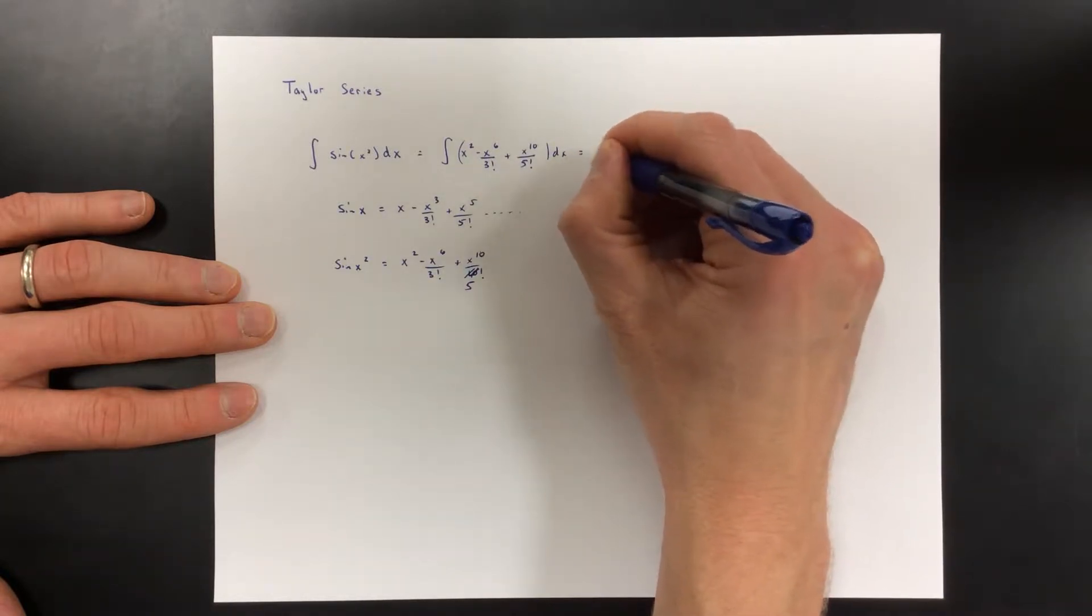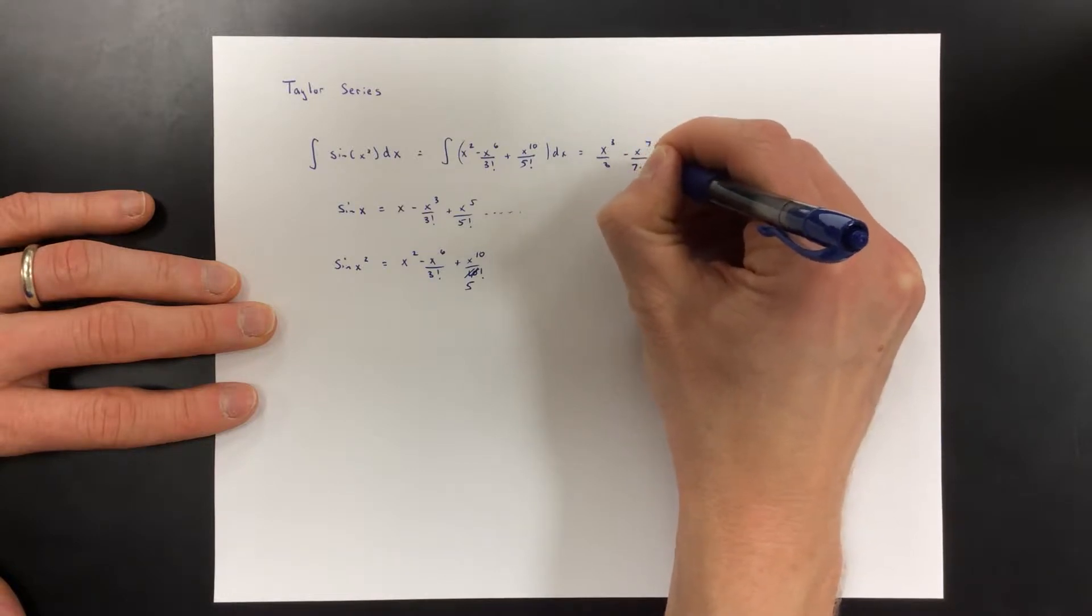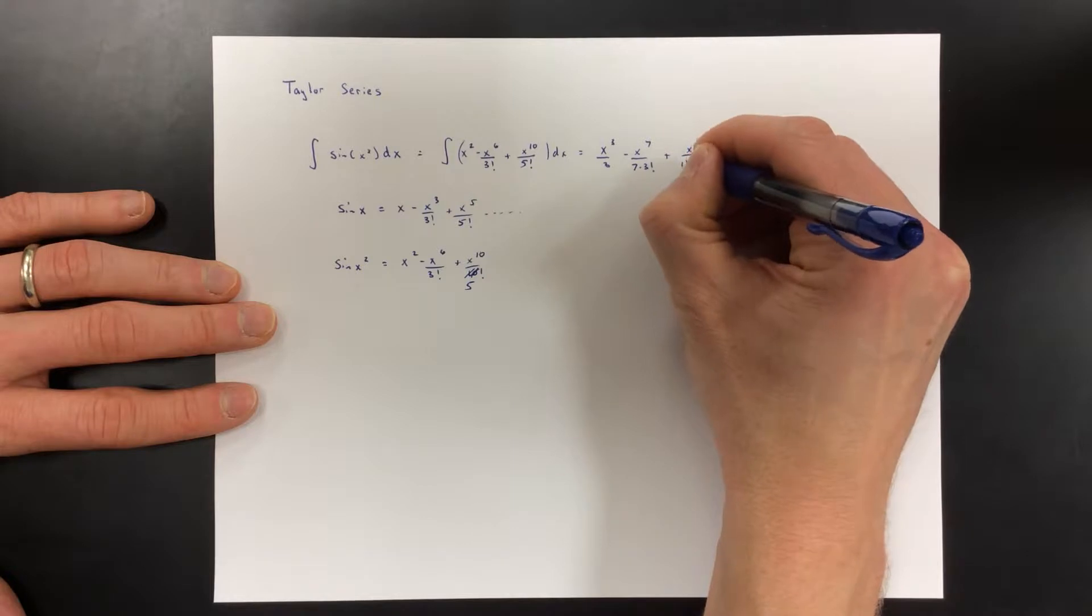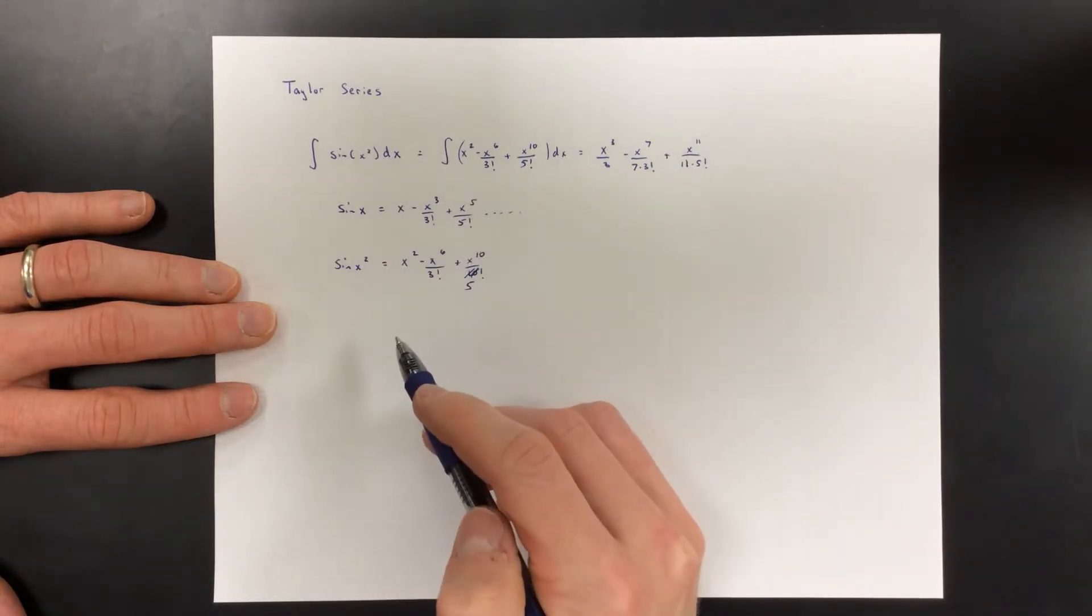And then the integral is pretty easy because we just do the power rule. So that's x cubed over 3 minus x to the 7 over 7 times 3 factorial plus x to the 11th over 11 times 5 factorial, and then we can evaluate that at whatever bounds we need.